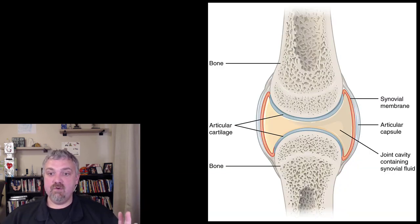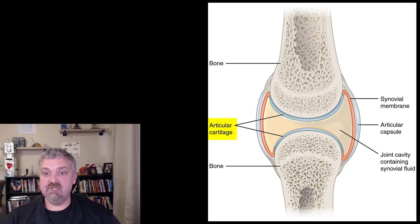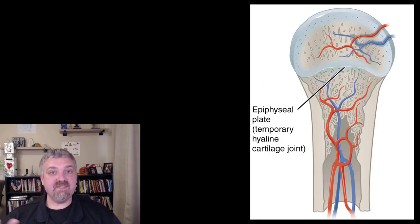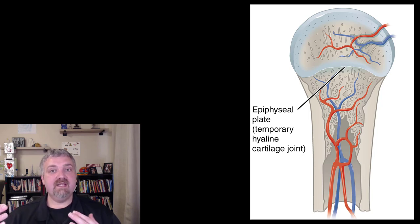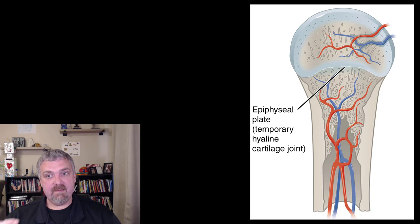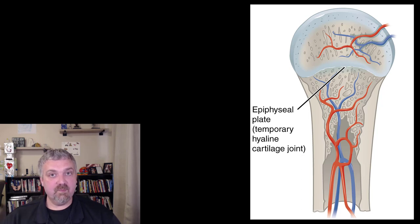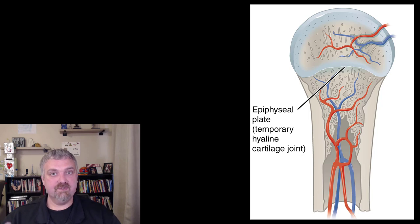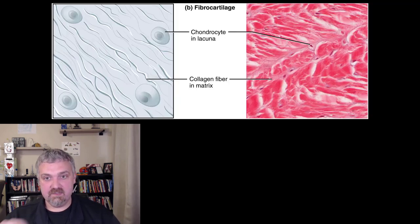Looking at some pictures: here we see a synovial joint — the articular cartilage there would be hyaline cartilage. This is the epiphyseal plate, also known as the growth plate, which is cartilage. The entire bone used to be cartilage and then becomes bone. The growth plate is the last piece of that bone that is still cartilage. When that growth plate disappears, it will all become bone. An epiphyseal plate becomes an epiphyseal line when bone growth has ended.